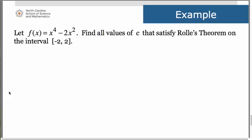So let's take a look at an example. We have the polynomial function f(x) = x⁴ - 2x², and we are asked to find all values of c that satisfy Rolle's theorem on the interval [-2, 2]. As we did with the mean value theorem, we need to make sure that the conditions hold true for this particular polynomial.